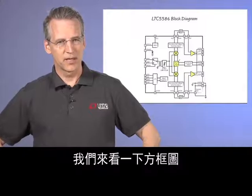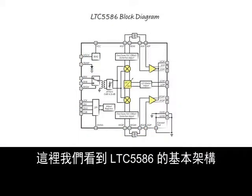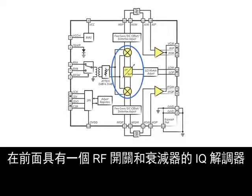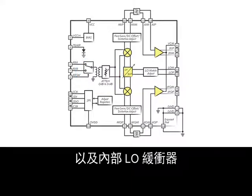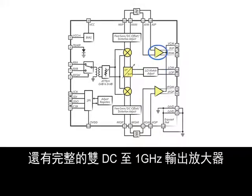Let's look at the block diagram. Here we see the basic LTC5586 architecture consists of an IQ demodulator with an RF switch and attenuator at the front, with internal LO buffers and programmable LO impedance matching network, and integral dual DC to 1 GHz output amplifiers.